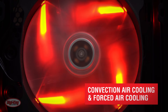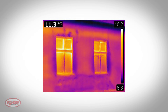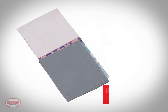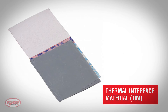Convection air cooling and forced air cooling are perhaps more common types of thermal management approaches. Convection air cooling is where heat is transferred from the hot device by the flow of the air surrounding the object. Forced air cooling makes use of fans. TIM, or thermal interface material, is a material that is inserted between two parts in order to reduce thermal resistance between these two components.